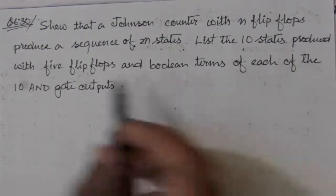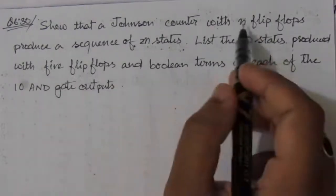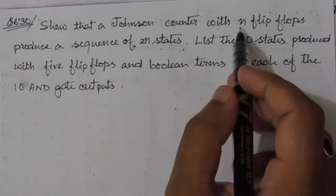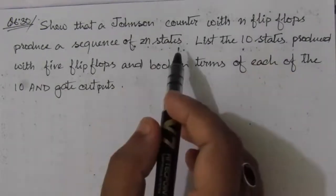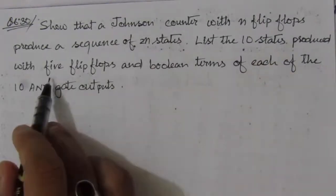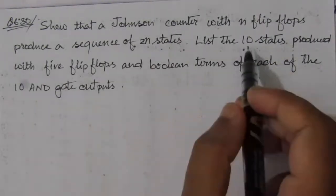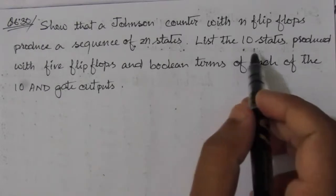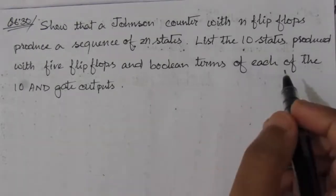In the first part we are told that if we use n flip-flops we have 2n states, so here we have to use five flip-flops and show that we have 10 states, then make a list of them.